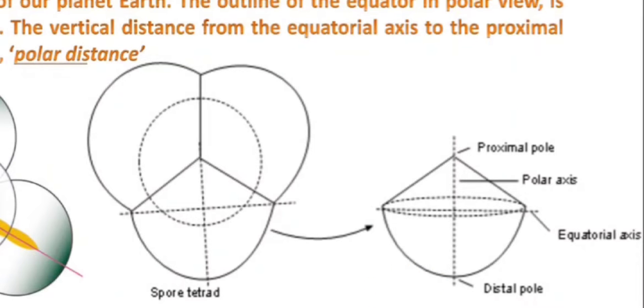The imaginary line that passes across these poles through the center of the spore or pollen grain will be called the polar axis.